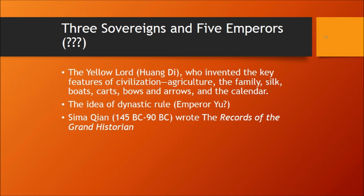Let's move on to the next period, called the Three Sovereigns and the Five Emperors, which may not be an actual real time period. Most of our information about this comes from a historian named Sima Qian, who lived between 145 and 90 BC and wrote The Records of the Grand Historian. He tells us that most material the Chinese had in the first century BC was developed in an ancient period — many Chinese believe it was developed by Huang Di, the Yellow Lord, who supposedly invented things like agriculture, the calendar, and carts and boats. This is fairly typical: ancient people wonder where their civilization's material came from and look to ancient figures who may or may not have been real.